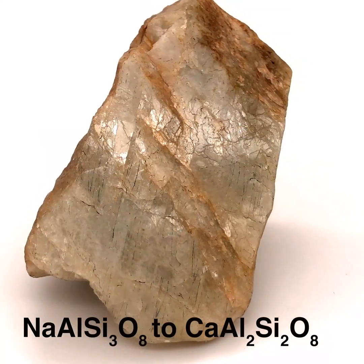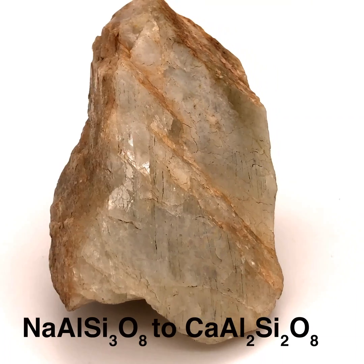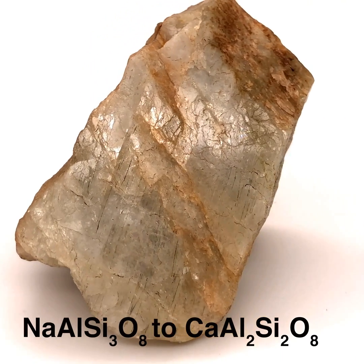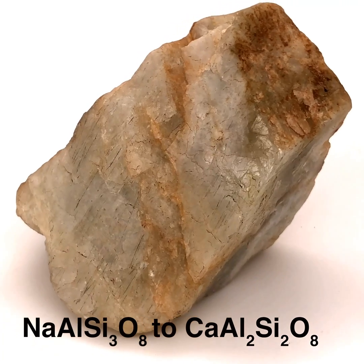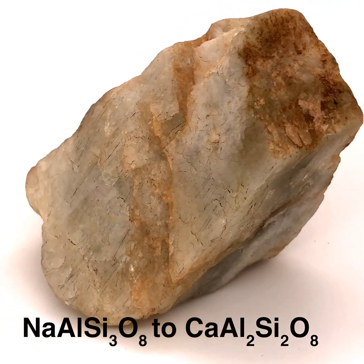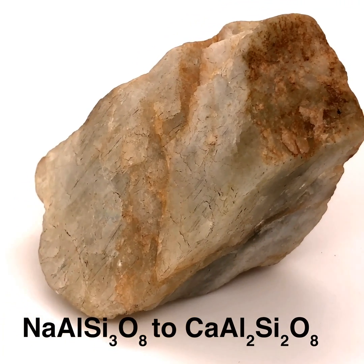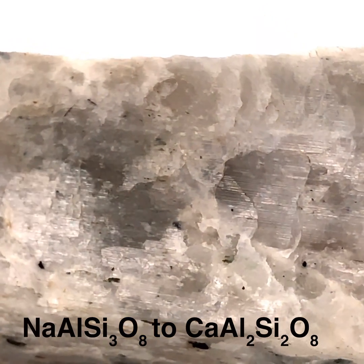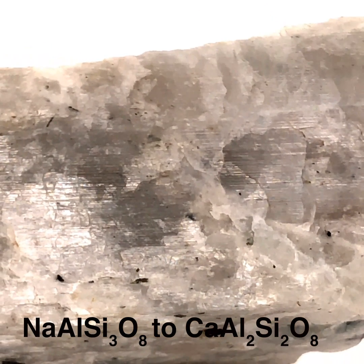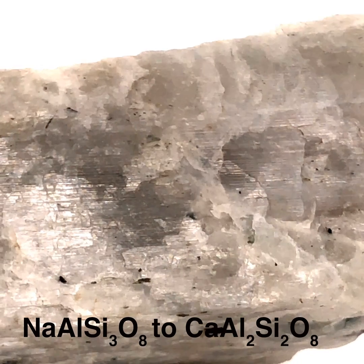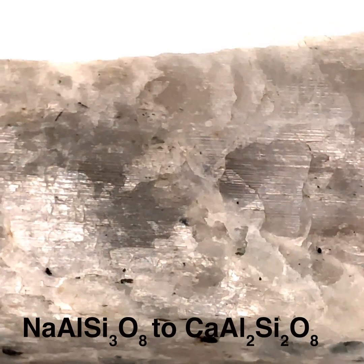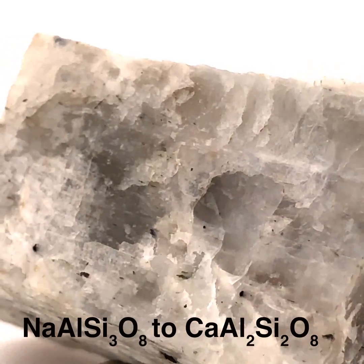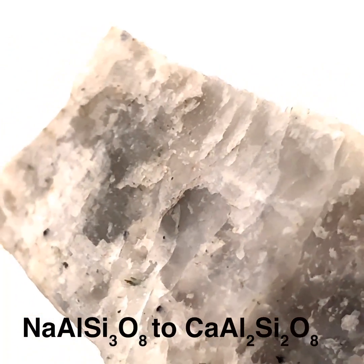In lab, we tend to deal with cleaved masses where the perfect cleavage is one of the most iconic characteristics. There's also going to be vitreous to pearly non-metallic luster and colors ranging from gray to colorless. The most important criteria to look for is the presence of polysynthetic twinning, which will appear as mechanical grooves on cleavage faces. The presence or absence of polysynthetic twinning is the best way to differentiate plagioclase from potassium feldspar.